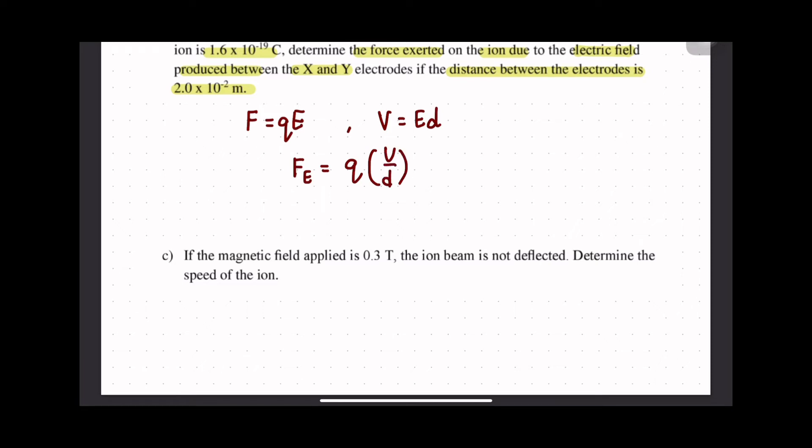So substitute the values: q is 1.6 × 10^-19, V is 6 × 10^3, and d distance is 2 × 10^-2 meter. Finally we get FE = 4.8 × 10^-14 newton.